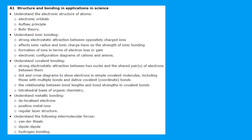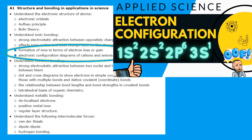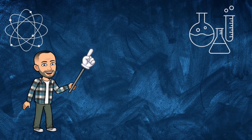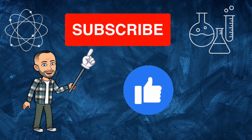Hello there, welcome to my channel on chemistry lessons. This is a BTEC Applied Science Unit 1 video and it focuses on the formation of ions in terms of electron loss or gain, as well as the electron configuration for these cations and anions. If you haven't seen the previous video on electron configurations, you need to go away and do that first — you'll find a link in the description below. Please like and subscribe so we can get these videos out to as many people as possible.